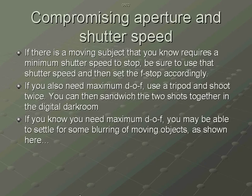In real life you usually have to choose between going for maximum depth of field, stopping action, or making the best compromise in between. You'll have to compromise shutter speed if there is a moving subject that requires a minimum shutter speed to stop. If that's the case, be sure to use that shutter speed and then set the f-stop accordingly.